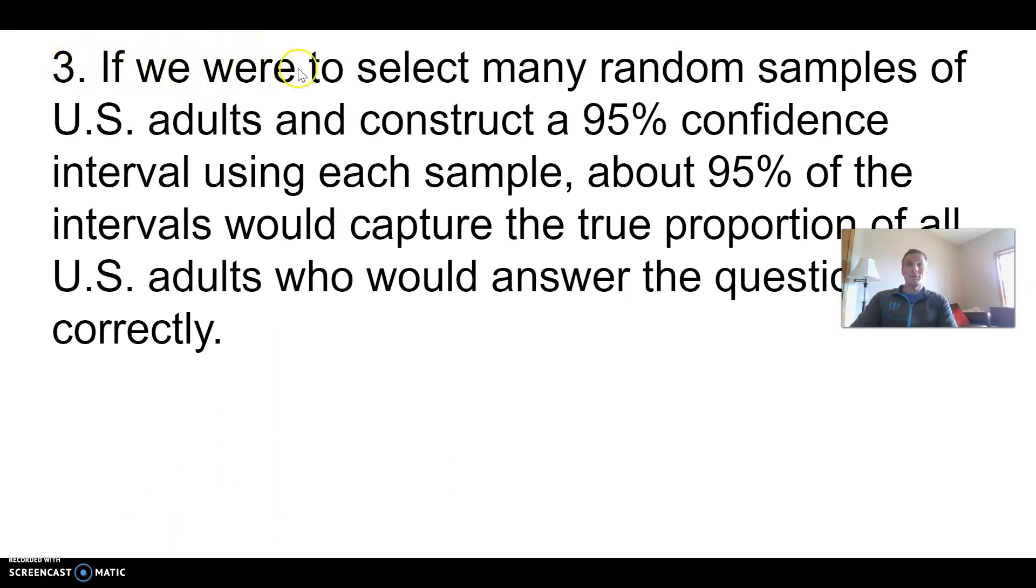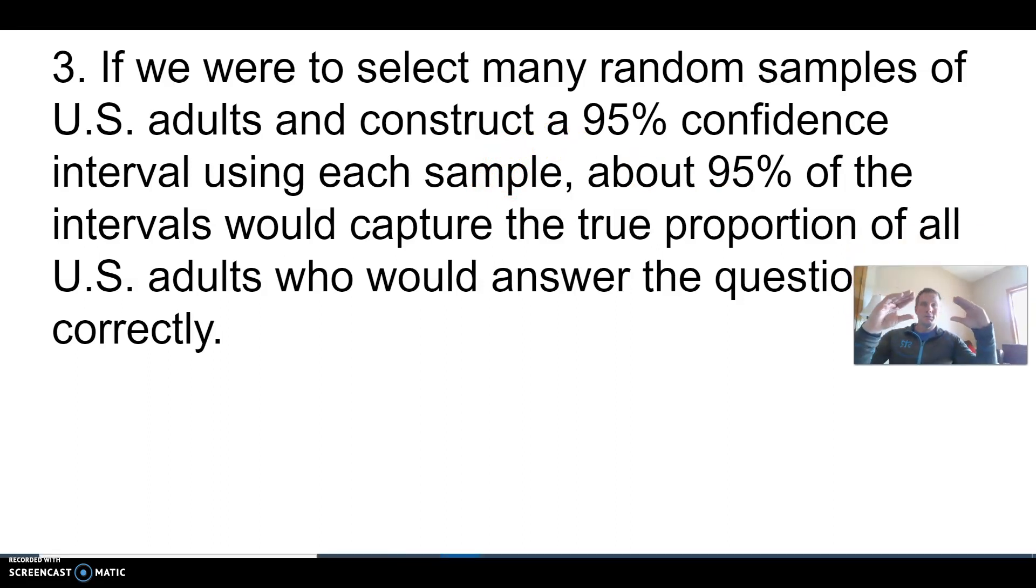This should say number two. If we were to select many random samples of U.S. adults and construct a 95% confidence interval using each sample, and follow this process over and over many times, about 95% of those confidence intervals would capture the true proportion of U.S. adults. Sometimes we'd have a red bar - we would miss the true proportion. But only about 5% of the time. 95% of our intervals should capture the true proportion in the long run.